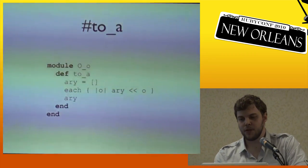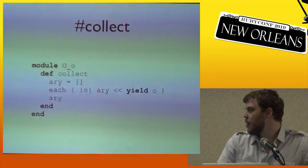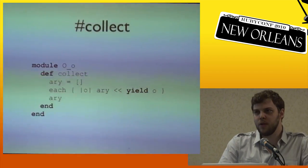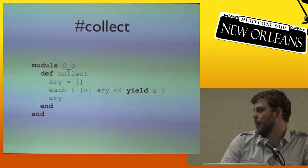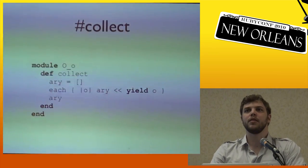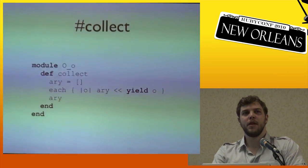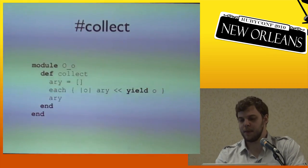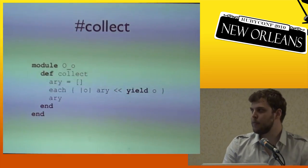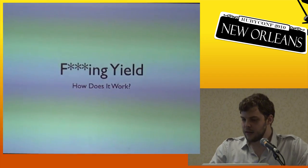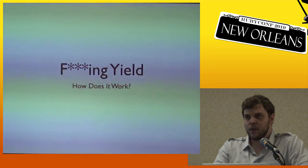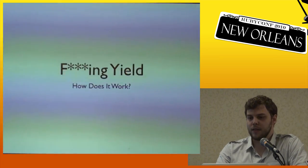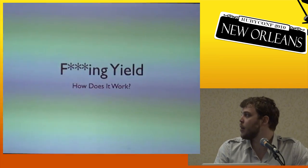Collect is similar to `to_a`, but instead of pushing the item onto the array it pushes the return value of yielding the item to a block. Yield is very foundational — it's a core part of Ruby. Yield invokes the code in a block passing any arguments, and when the block exits, control picks back up immediately thereafter.